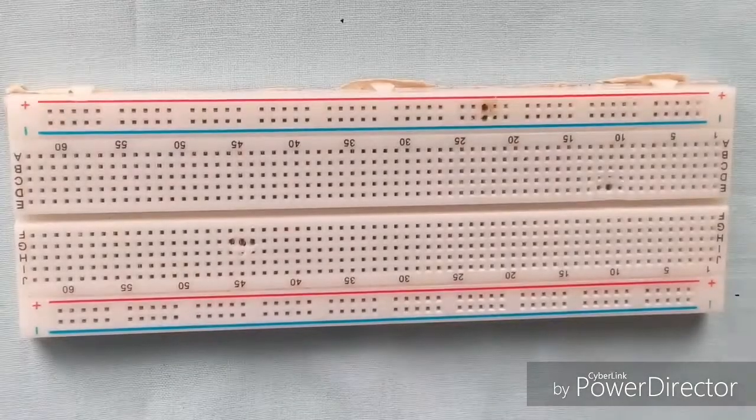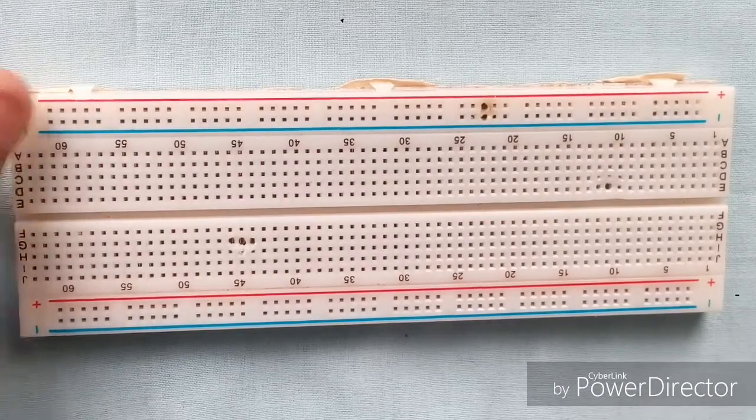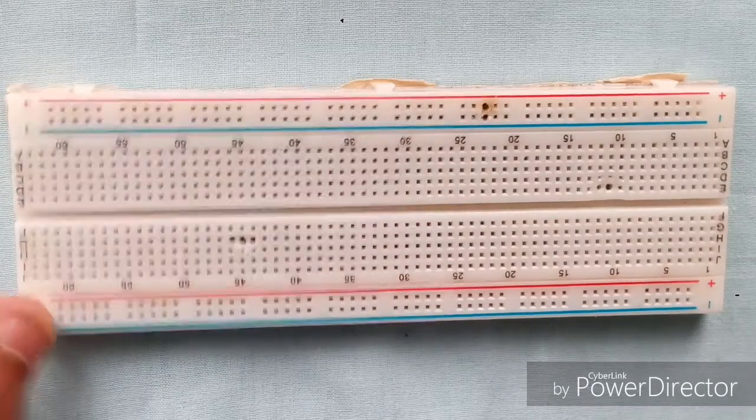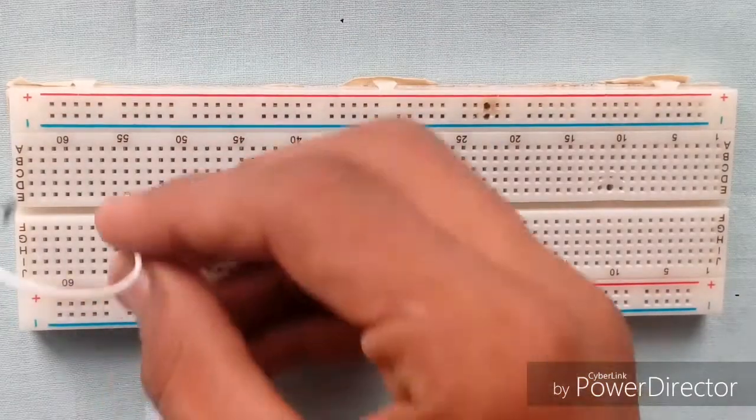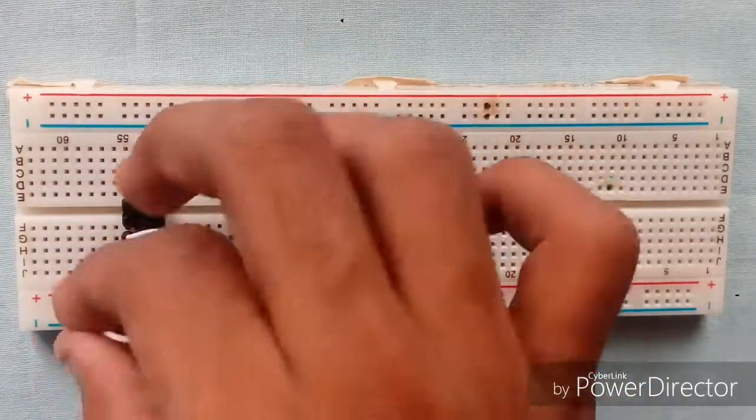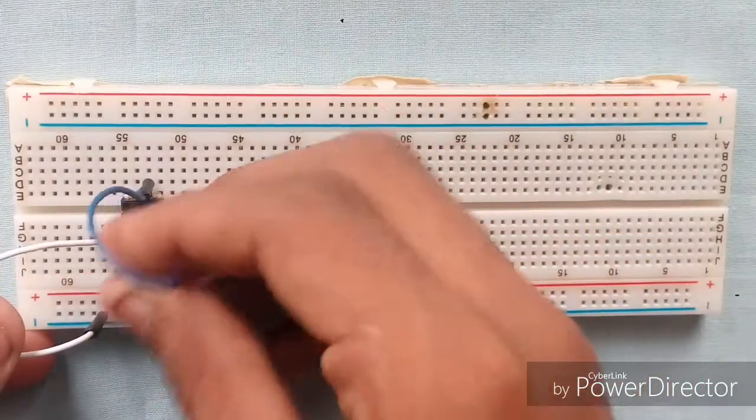Before going into detail and building the circuit, first I want to say this is going to be our positive rail of the breadboard and this is going to be our negative rail. Now place your NE555 IC on the breadboard and connect pin 1 to the negative rail, and connect pin 6 and pin 2 with each other.